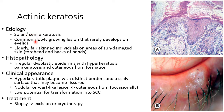Coming to the next lesion — actinic keratosis, it is also known as solar or senile keratosis. It is a common slowly growing lesion that rarely develops on eyelids. It is common in elderly fair-skinned individuals on areas of sun-damaged skin like the forehead and backs of hands. Histopathology shows irregular dysplastic epidermis with hyperkeratosis, parakeratosis, and cutaneous horn formation, as you can see in this picture.